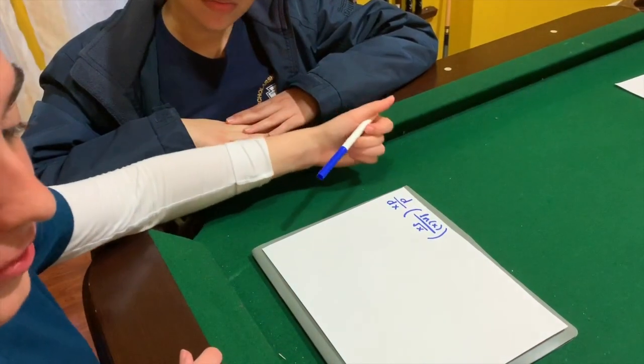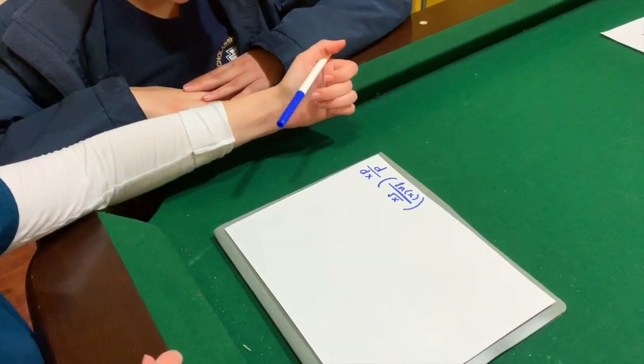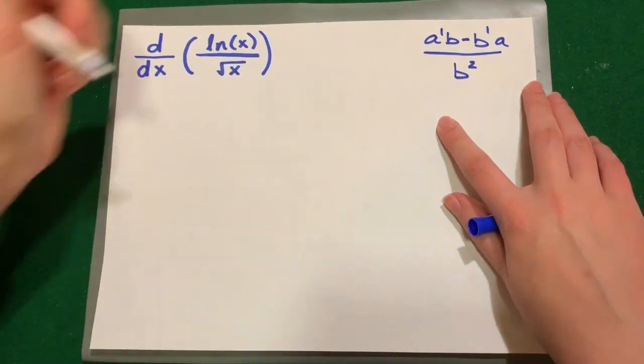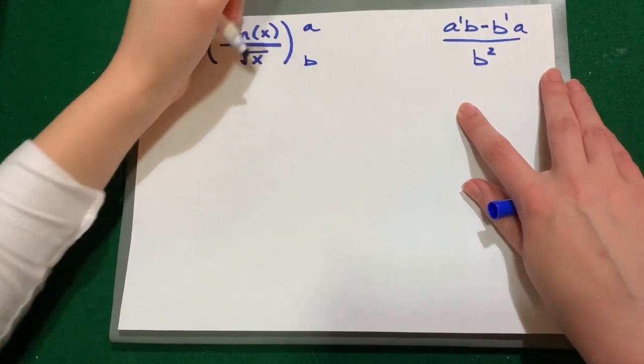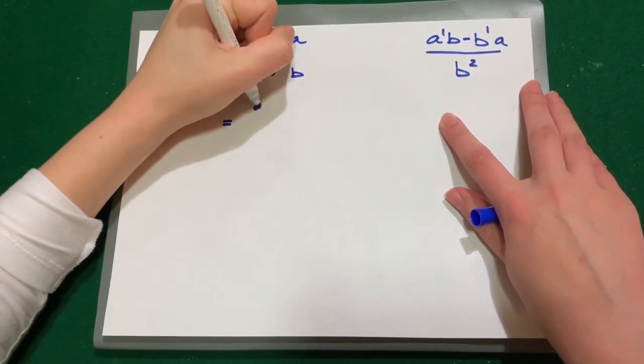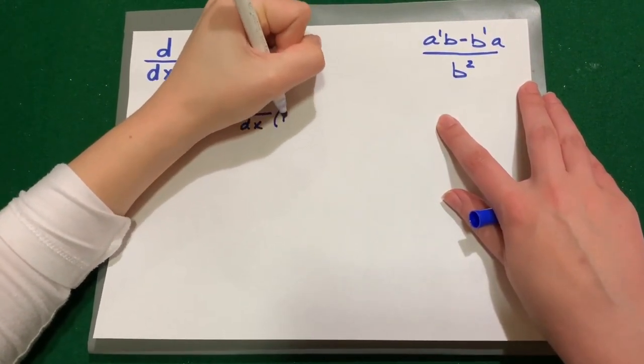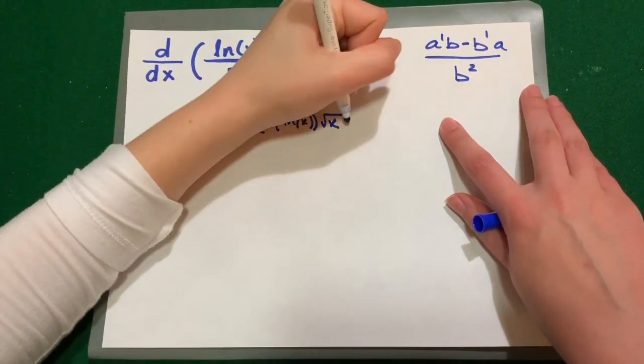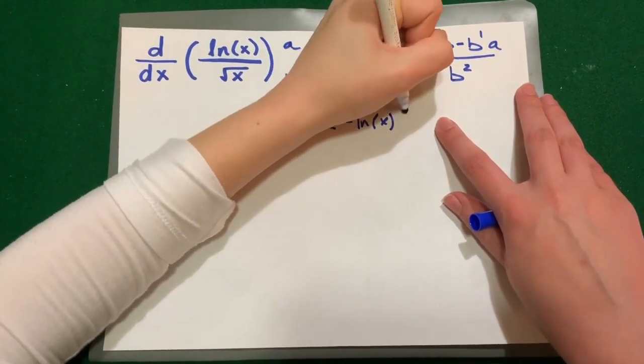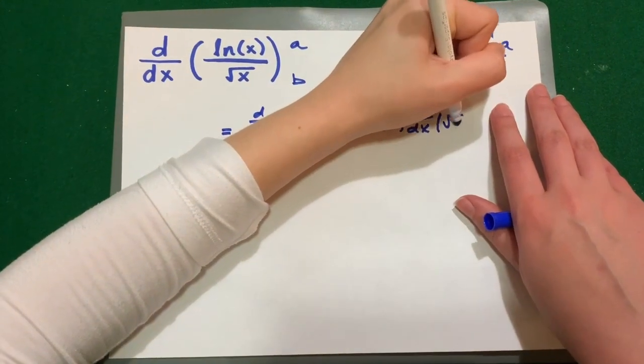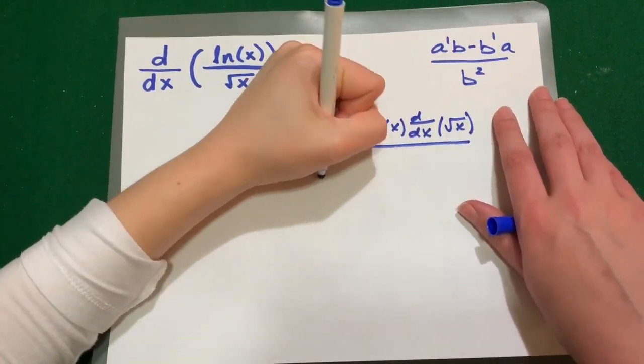So you find the derivative of the function that is the ratio of two differentiable functions. If the top is A and the bottom is B, you take the derivative of A times B minus the derivative of B times A over B squared.